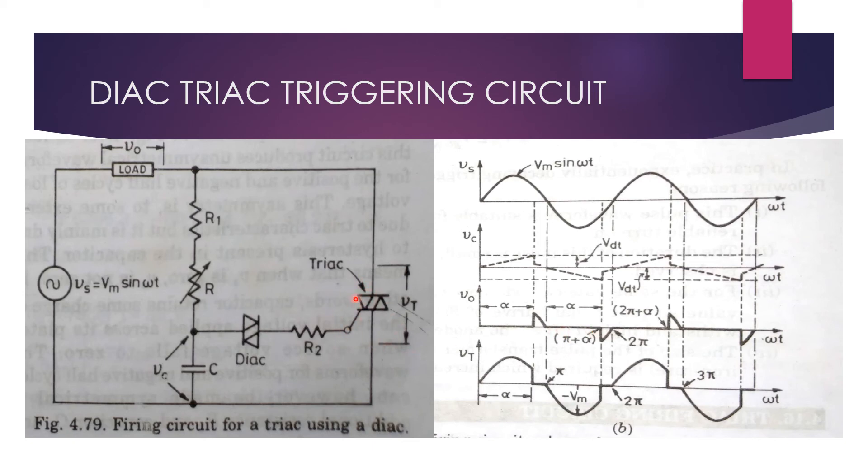Since the TRIAC has turned off, this part of the circuit has turned off. And now, since the voltage is negative, the capacitor now charges with the lower plate positive. The capacitor charges to a voltage of minus VdT.